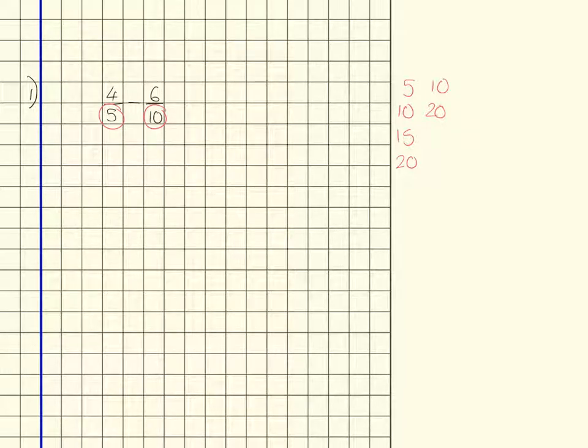Now we could go for twentieths, but that would leave us having to simplify even further, so we're not going to do that. We're actually going to go for tenths as the lowest common denominator, and in this case the lowest common multiple is 10.